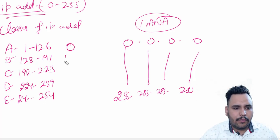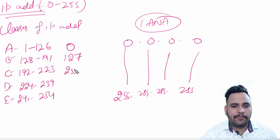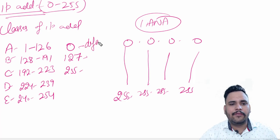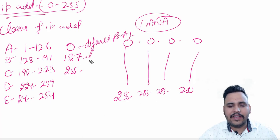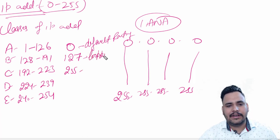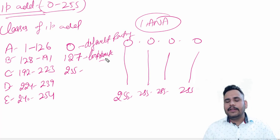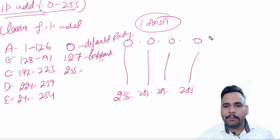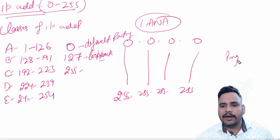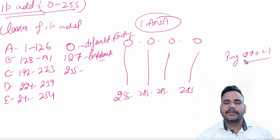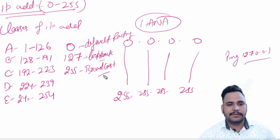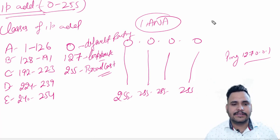So 0, 127, and 255 are missing from the ranges. 0 is reserved for the default route, which we will discuss in default routing. 127 is your loopback address — for example, if your PC wants to ping its own LAN card, we use the command ping 127.0.0.1. And 255 is reserved for broadcast.